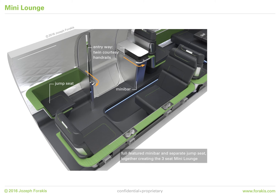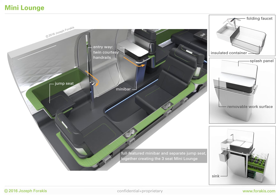Mini lounge. Complementing the forward seating area across the aisle is a full-featured minibar and separate jump seat, together creating the three-seat mini lounge. The sleek, compact minibar features a removable work surface that folds to reveal a sink with hot and cold running water, and a large slide-out trolley with carefully designed holders for full sets of flutes, tumblers and wine glasses.